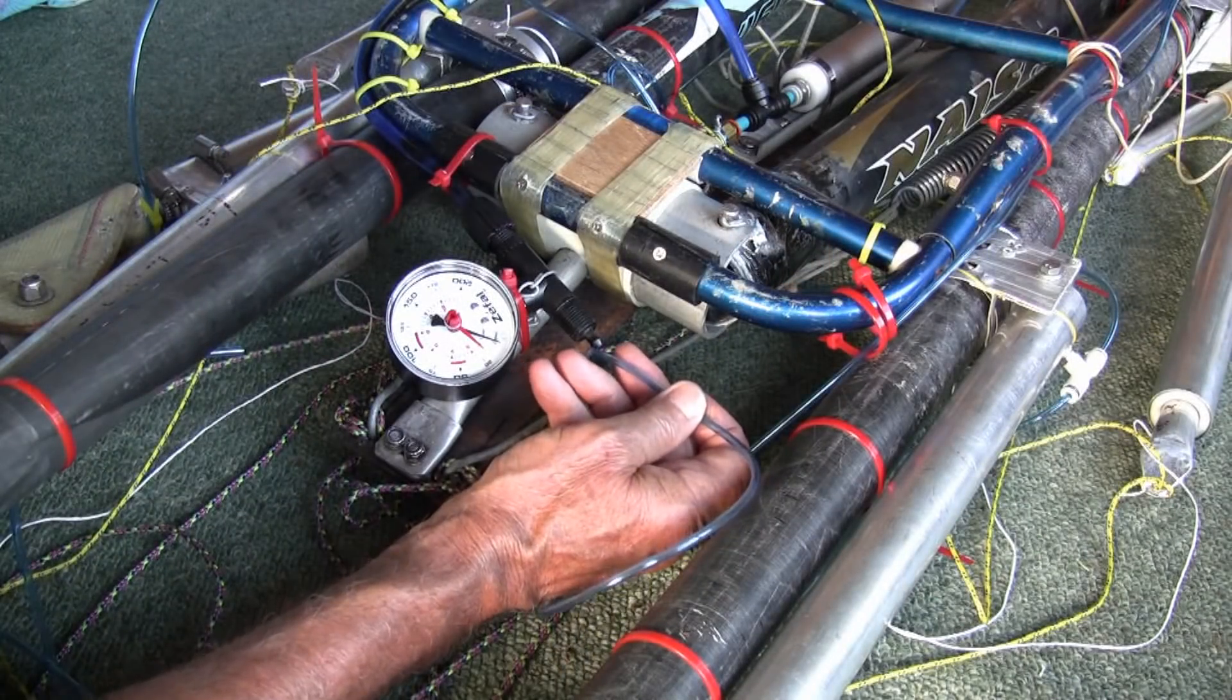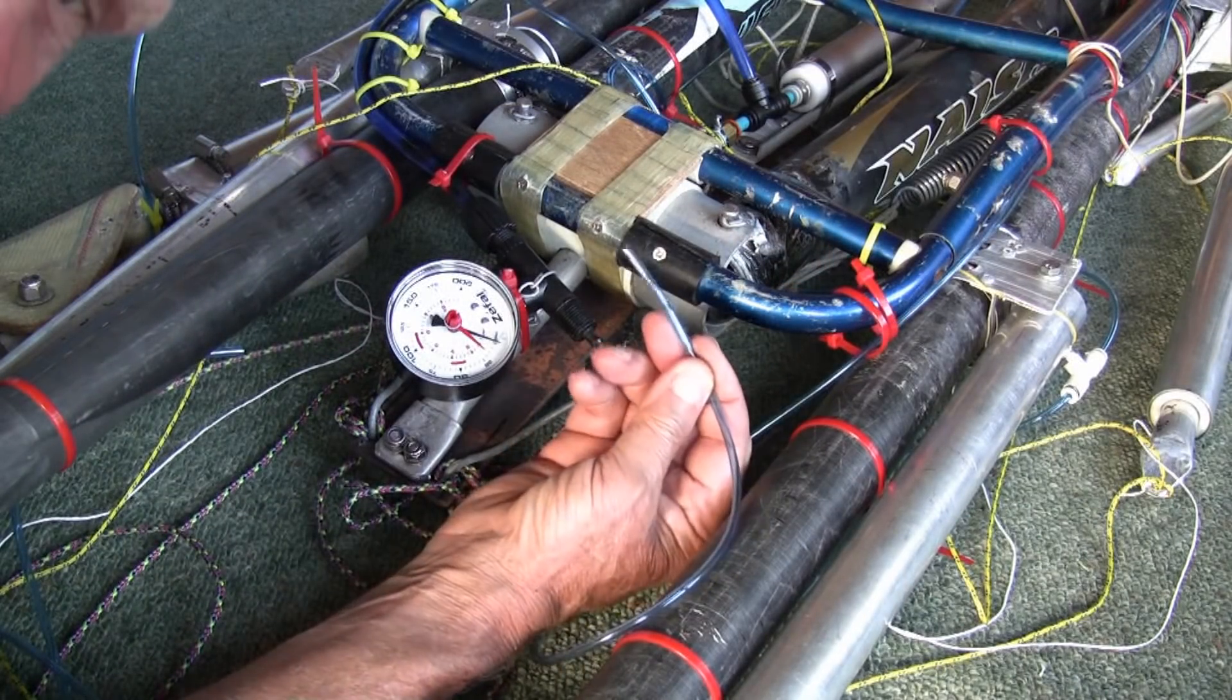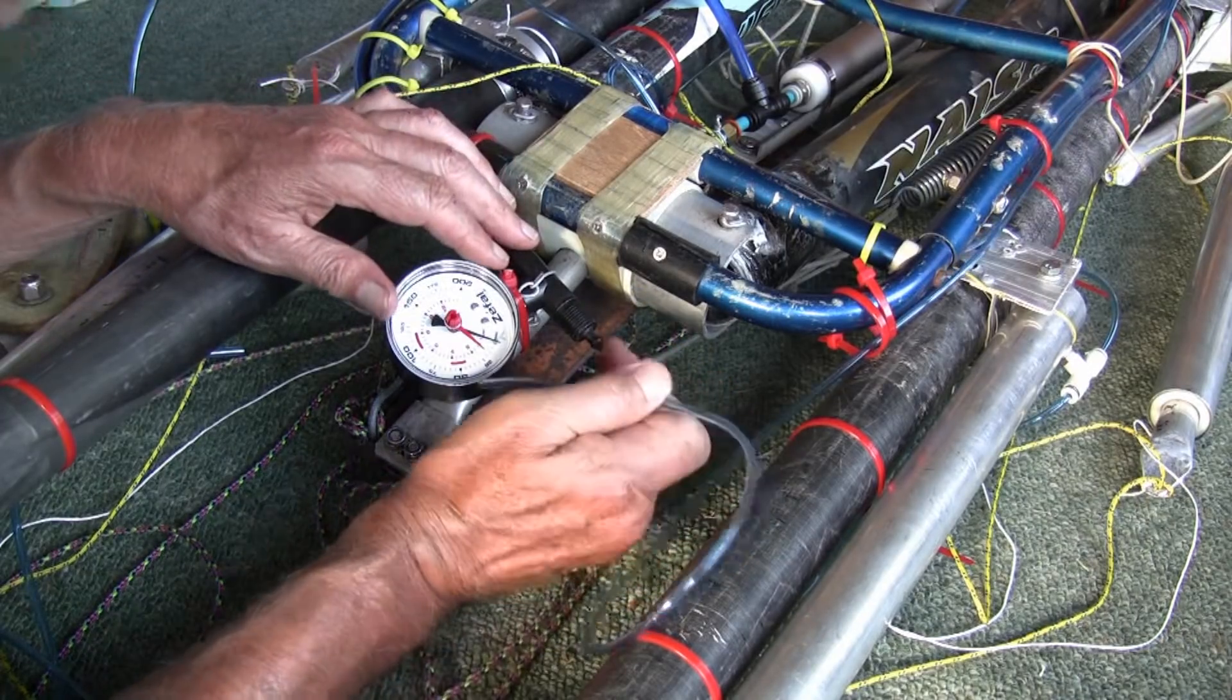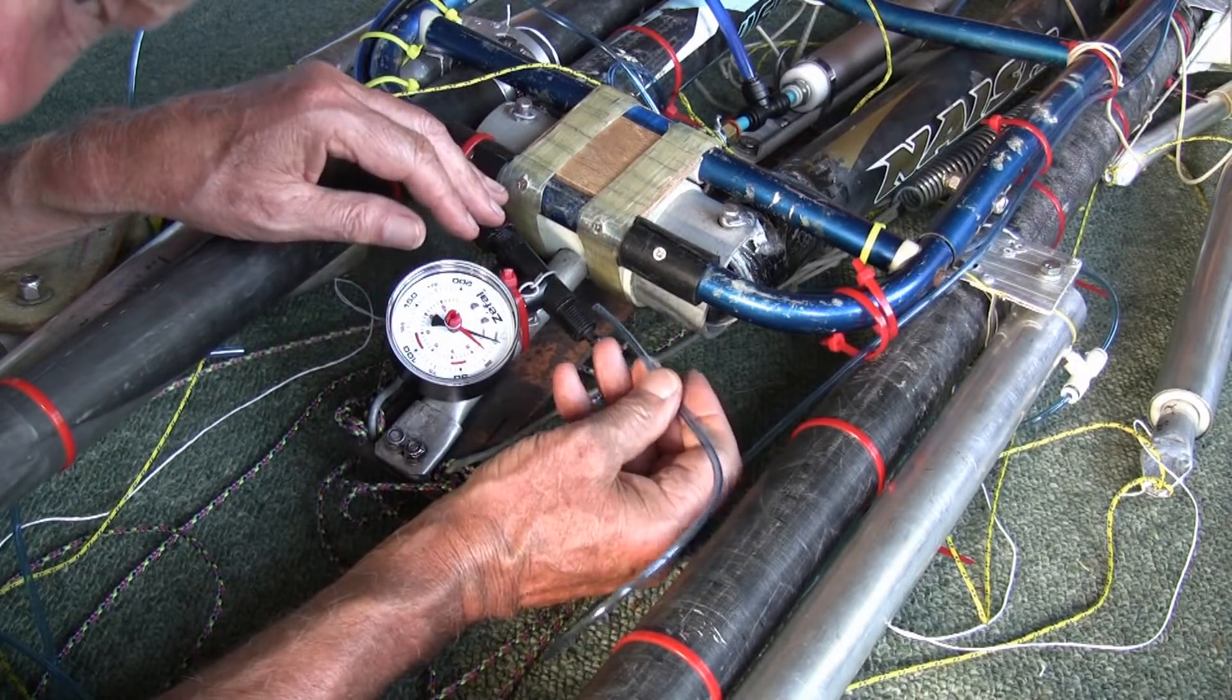I still have to figure out how to join this four millimeter tube to the wide nozzle on the pressure gauge.